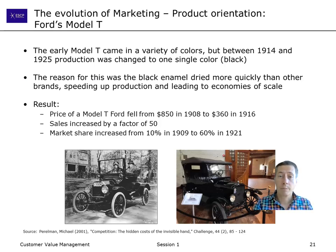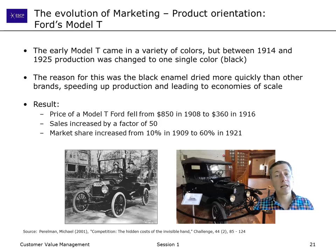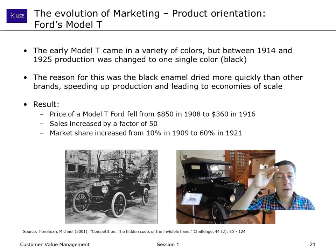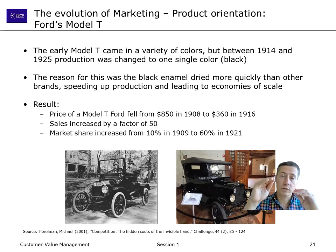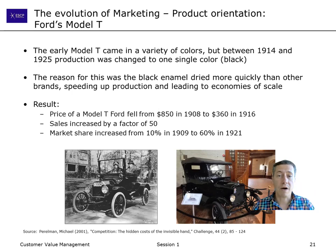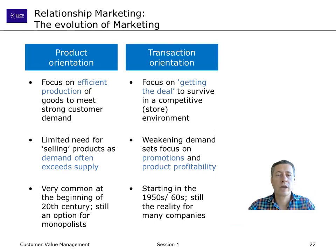This seems like a very non-marketing decision — many customers want colors other than black — but under the logic we just discussed it makes sense. Moving from multiple colors to one color reduces complexity and increases production output, say from 500 to 600 cars. Since there is already far more demand than supply, even if 200 of the 1,000 customers would never buy a black car, you still have 800 potential buyers versus 600 production capacity. So switching to black only still makes more money.